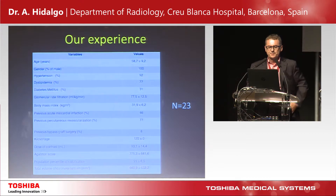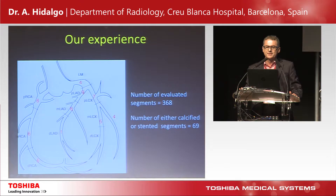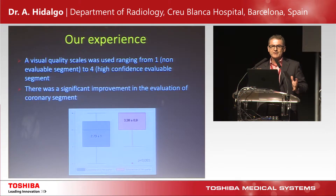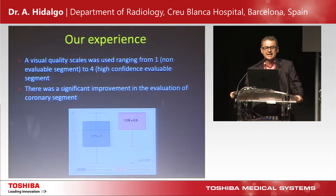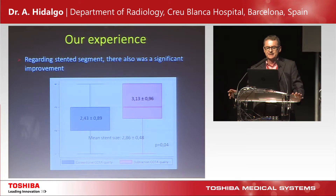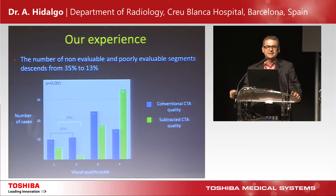So far, we have studied 23 patients. As you can see, the Agatston score was quite high. We evaluated a large number of segments, including many with stents and calcified plaques. We used a visual quality scale ranging from non-evaluable to high-confidence evaluable segments. There was a significant improvement in the evaluation of coronary segments, and for stent segments specifically, we also achieved significant improvement. Importantly, the number of non-evaluable and poorly evaluable segments decreased by more than half, from 35% to 13%.